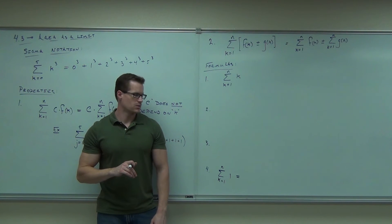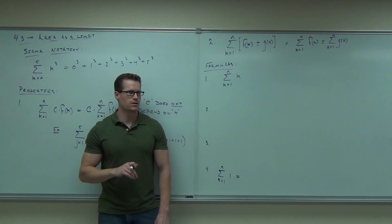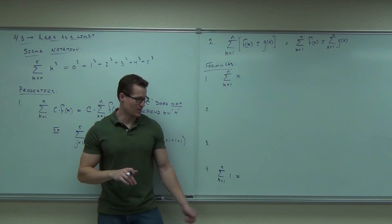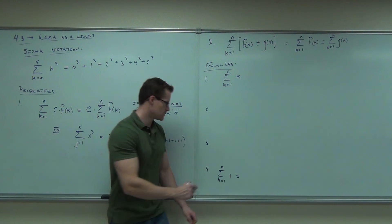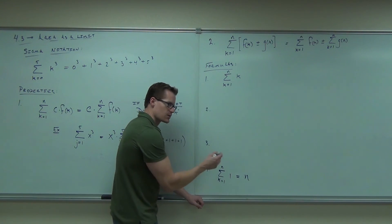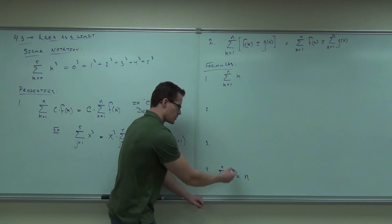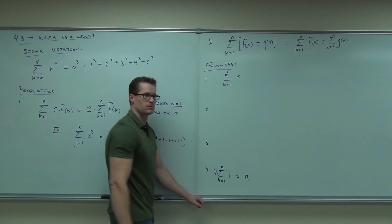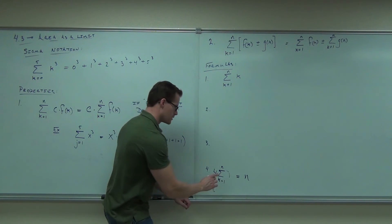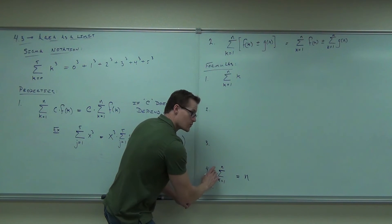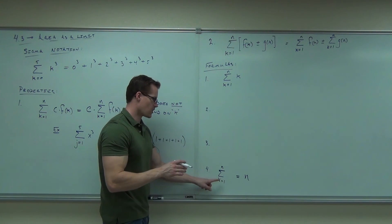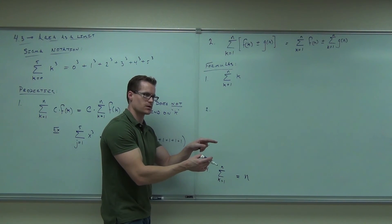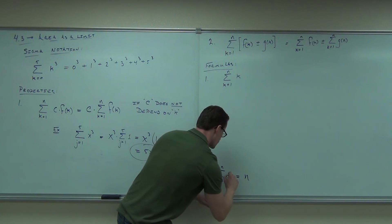What would a summation from k equals 1 to n of the number 1 be? 1 plus 1 plus 1... n times — that's n. If it had been any other constant like 4, you pull the 4 out front and change it to a 1, giving you 4n. If k starts at 2 or 3 instead of 1, these formulas don't apply directly — you'd figure out from 1 to n and subtract off from 1 to wherever it started minus 1. That's the appropriate way to handle that.